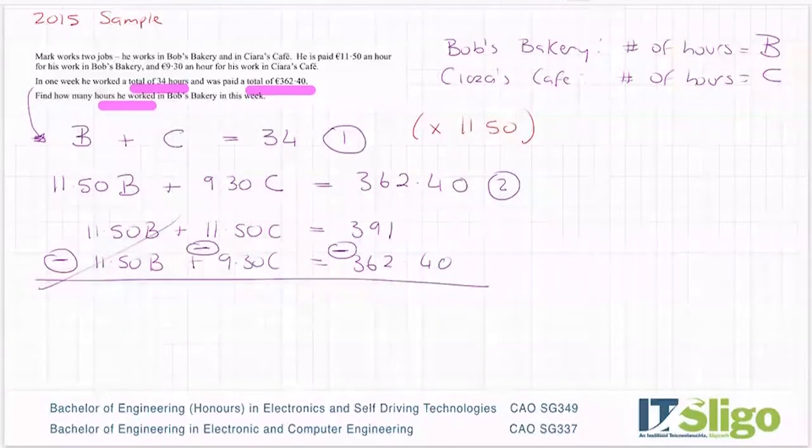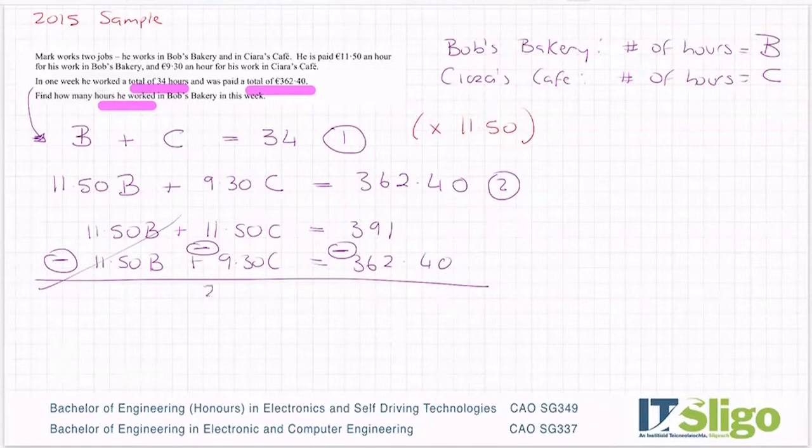So into my calculator then, I'm going 11.50 minus 9.30, and I'm getting 2.20C being equal to 391 minus 362.40. And I'm getting 28.60.